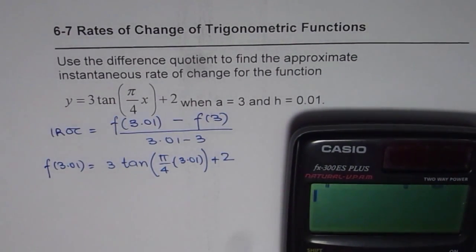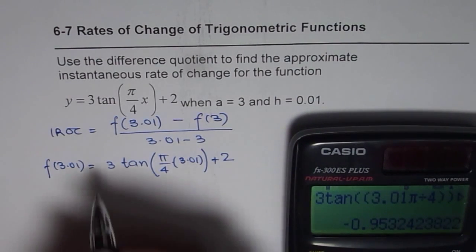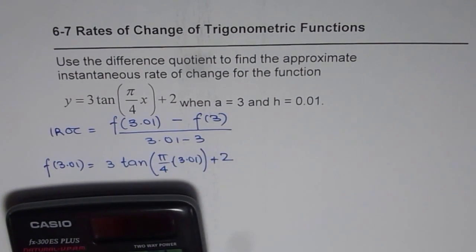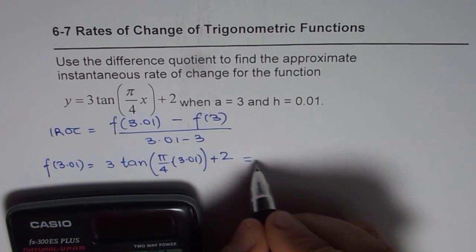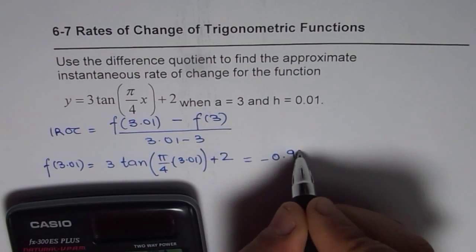So which is 3 times tan within brackets, 3.01 pi divided by 4, now bracket close, so I have actually put 2 brackets close, plus 2 equals to minus 0 point. Let me write it here, which equals minus 0.9532.